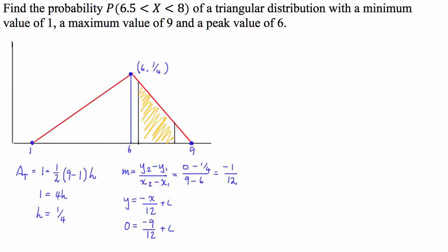So from this, we can see that the function that defines the distribution from 6 to 9 is going to be y equals negative x on 12 plus 3 over 4, or 9 over 12.